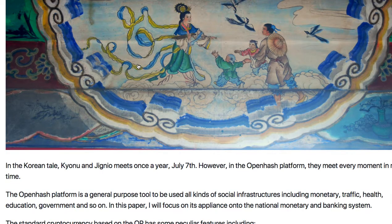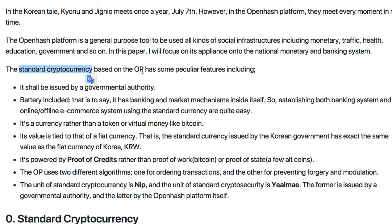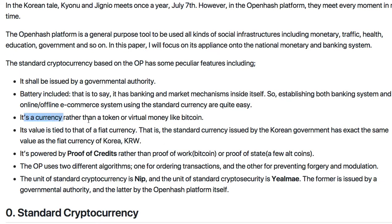The standard cryptocurrency based on OpenAsh platform has some peculiar features different from other cryptocurrencies such as Bitcoin, Ethereum, or Ripple. Because standard cryptocurrency shall be issued by a governmental authority or central bank. And the battery is included — that is to say, banking and market mechanisms reside inside the cryptocurrency itself. No other mechanism is necessary to establish or operate a bank, because the currency itself has banking functions and market functions too. It's currency rather than a token or virtual money.